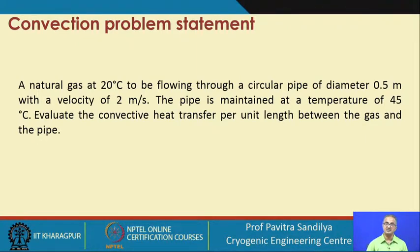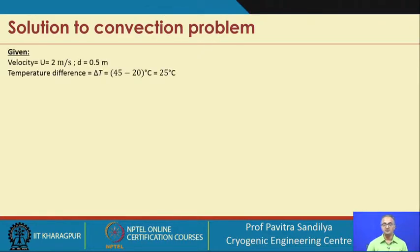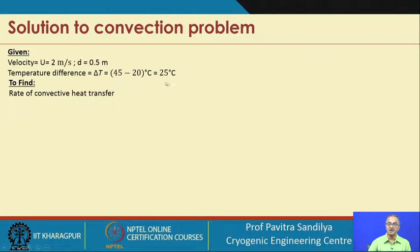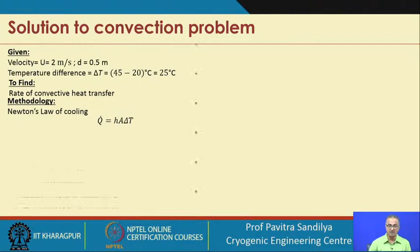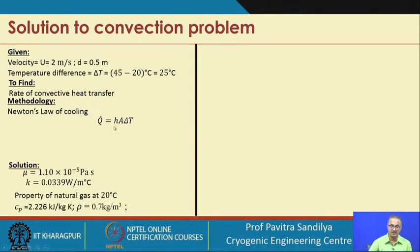Because the pipe is at a higher temperature than the gas, the natural gas will tend to heat up during flow. For this we use Newton's law of heating. The given values are: gas velocity, pipe diameter, and temperature difference of 25 degrees centigrade. We use Q = H·A·ΔT, and the key question is how to find the value of H, the heat transfer coefficient.